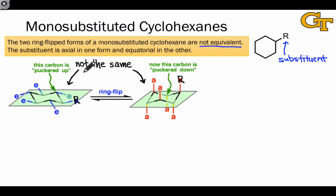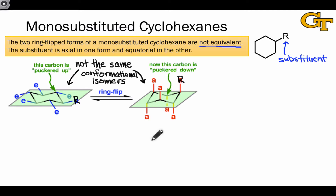One way to think of them is as conformational isomers, like the anti- and gauche isomers of 1,2-dibromoethane, for example. Like those anti- and gauche structures, these two molecules have different energies, different stabilities.